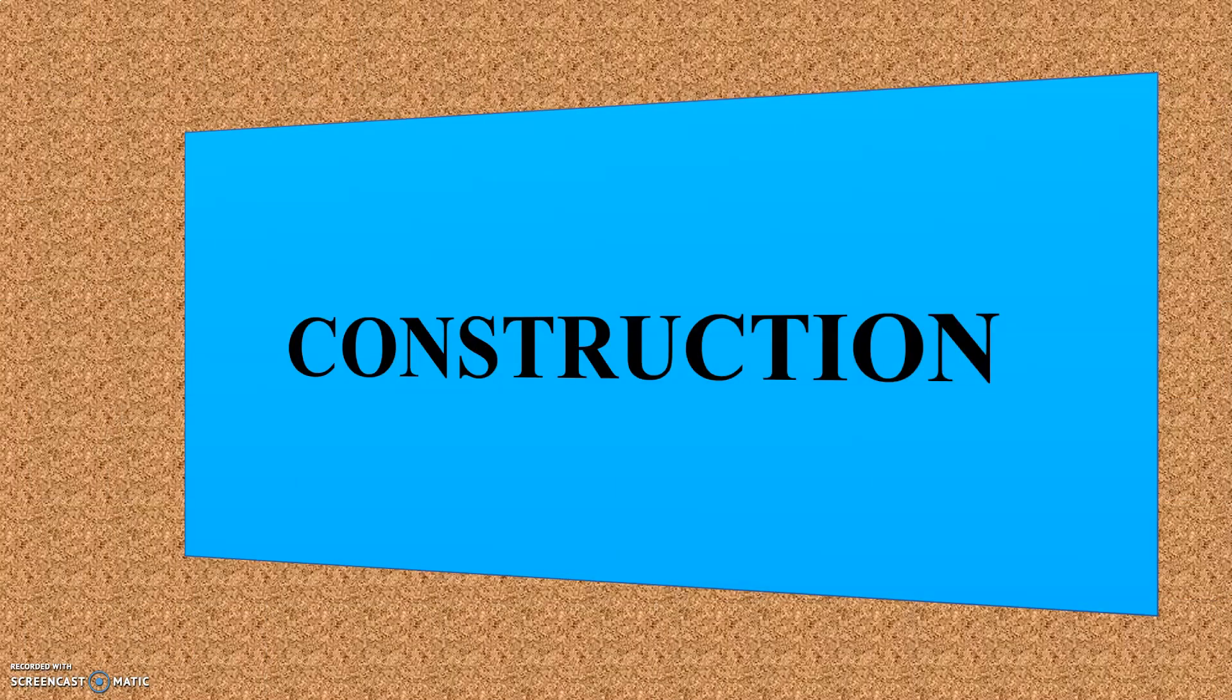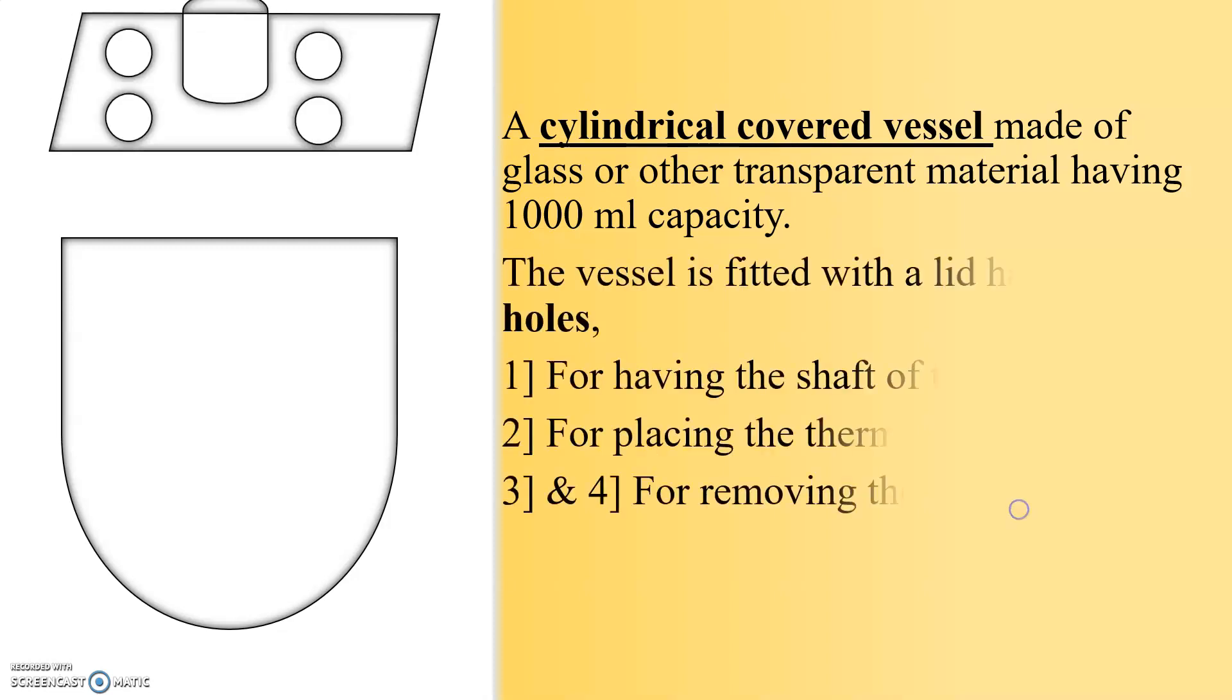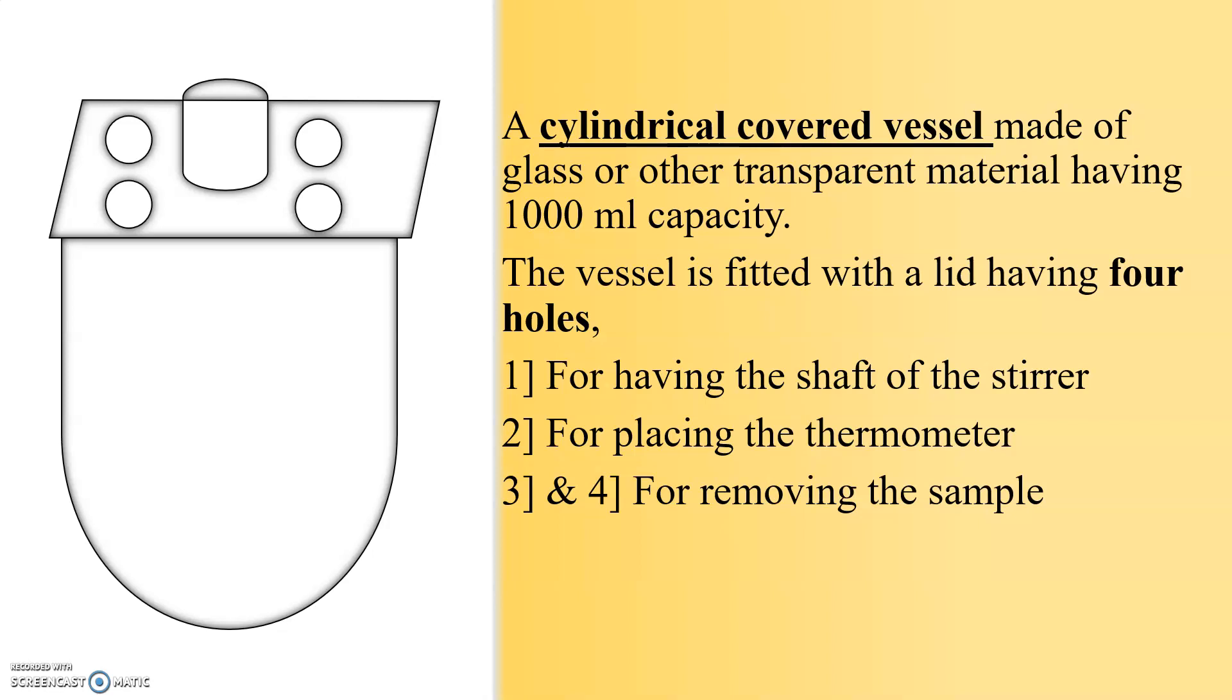Now, let us see the construction of Dissolution test apparatus. It consists of a cylindrical covered vessel made of glass or other transparent material having 1000 ml capacity. The vessel is fitted with the lid having four holes: one hole for having the shaft of the stirrer, second for placing the thermometer, and third and fourth holes for removing the sample. Here you can see in the diagram.